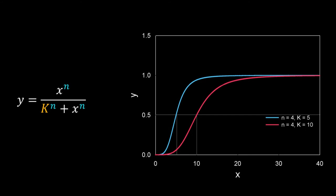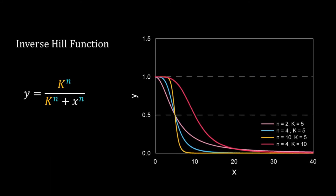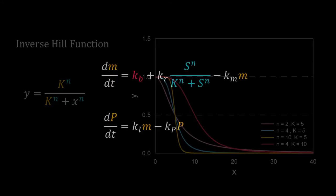Some transcription factors inhibit gene expression, and often such inhibition also shows a sigmoidal behavior. For this we use the inverse Hill function: y equals k to the power n divided by k to the power n plus x to the power n. The properties of the inverse Hill function are the same as those of the Hill function, except that y decreases with an increase in x.